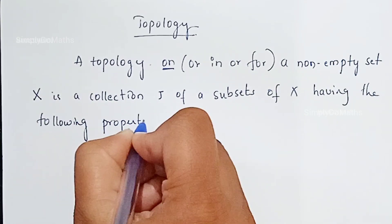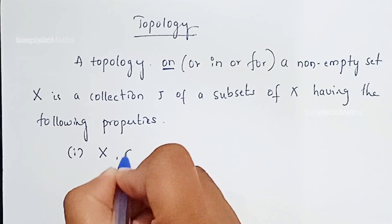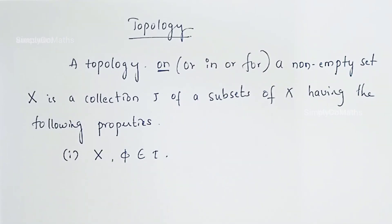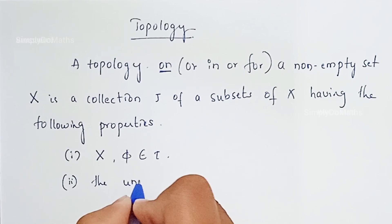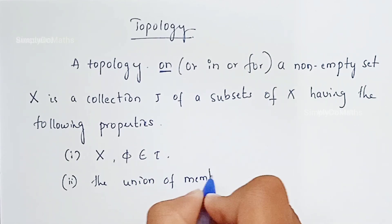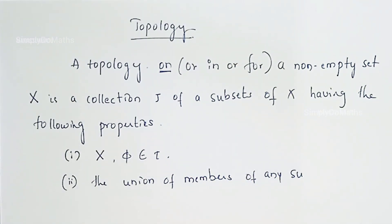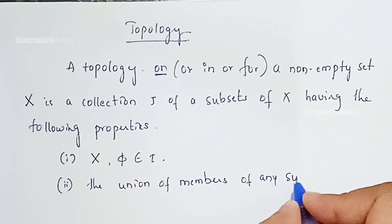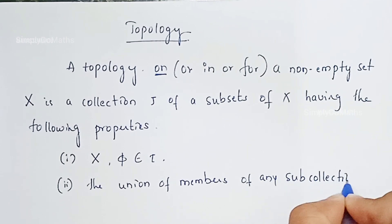These are very important properties. The first property is: the set capital X and the null set should belong to tau. The second property is: the union of members of tau should be a member of tau.